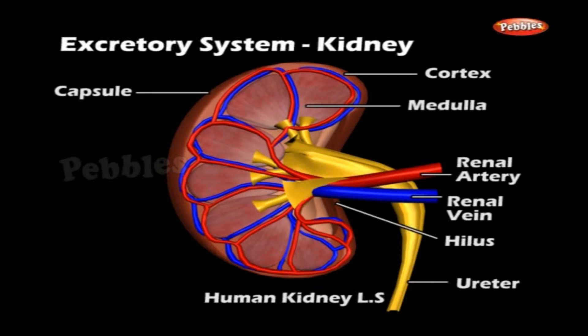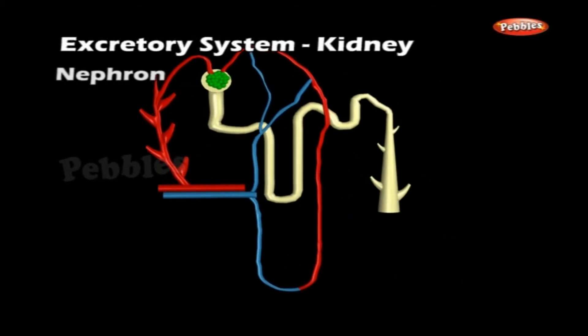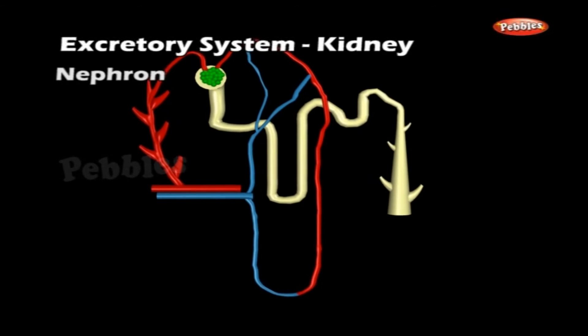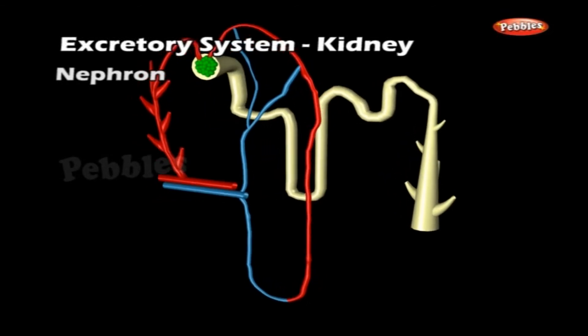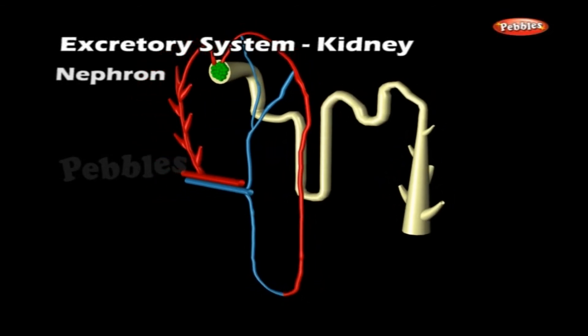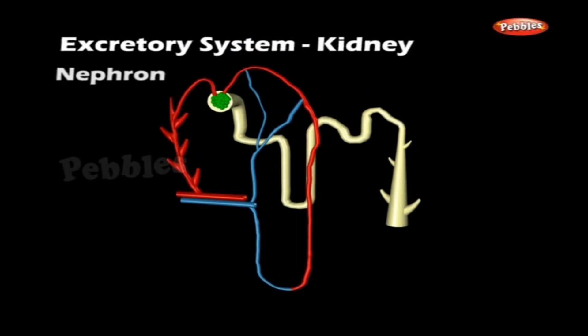Each kidney is made up of 1 million nephrons. The nephron is the basic functional unit of the kidney. Each nephron consists of an enlarged terminal end called the renal corpuscle.